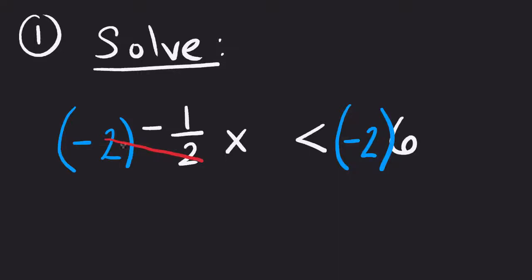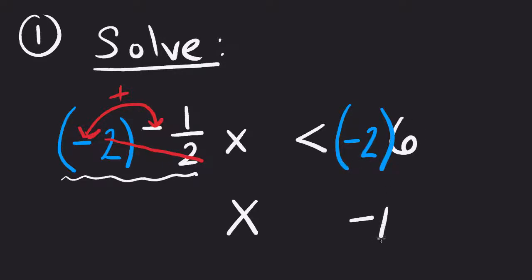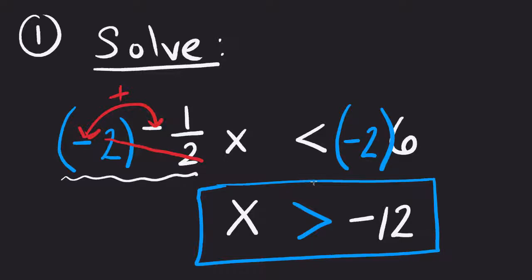The two reduces out, and the two negatives cancel, leaving just x. On the right side, because we're changing the sign — multiplying by negative two turns positive six into negative twelve — the inequality sign also changes, so this becomes greater than. The final solution is x is greater than negative twelve. Every sign in the entire problem changed: negative became positive, positive became negative, less than became greater than.